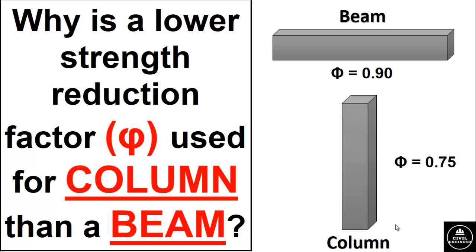Hello dear friends, welcome back to your YouTube channel Civil Engineer. In ACI 318 structural design method, we openly use the strength reduction factor φ. You will have definitely noticed that the strength reduction factor for beams is larger as compared to that of columns. In this video lecture we are going to discuss why a lower strength reduction factor φ is used for columns than beams.